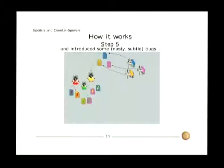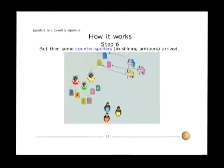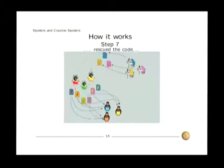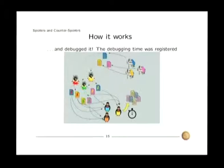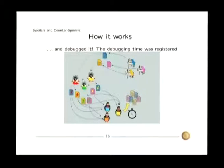Then you get some buggy code. You take a handful of counter-spoilers, give the buggy code to them, and measure how much time the counter-spoilers need to debug the code.